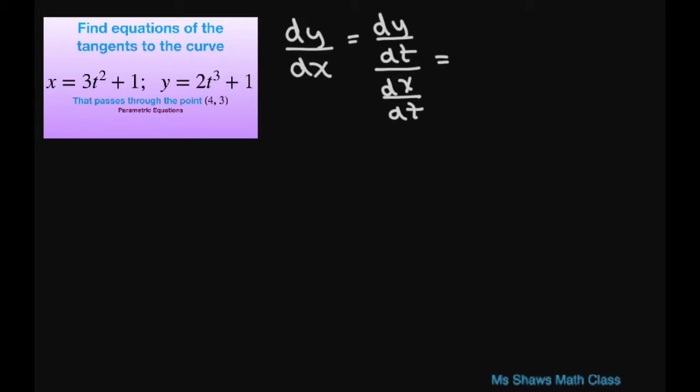Now this is going to equal derivative of y with respect to t is 6t squared and derivative of x with respect to t is 6t. So you get equals t. So that's your slope or gradient and this is also true if dx/dt equals 0.